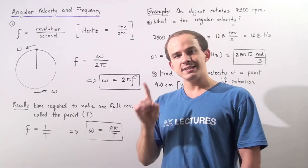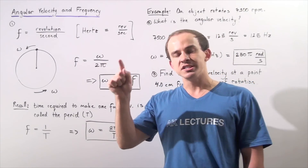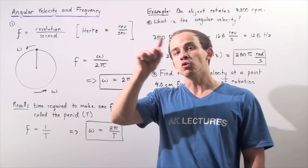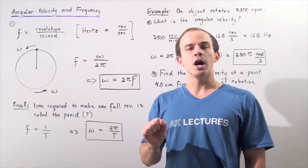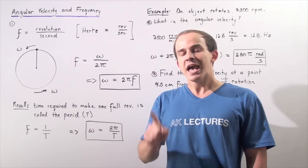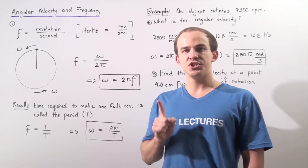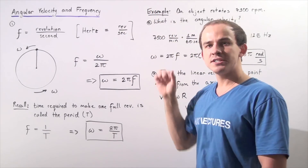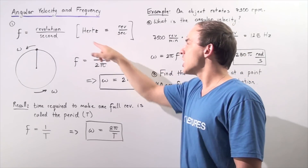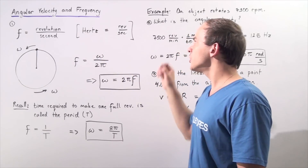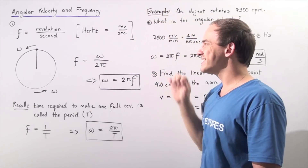Frequency is simply the number of revolutions — the number of full rotations our object makes per some given unit of time. That means the units of frequency are revolutions per second, which is known as hertz. So one hertz is equal to one revolution per second.